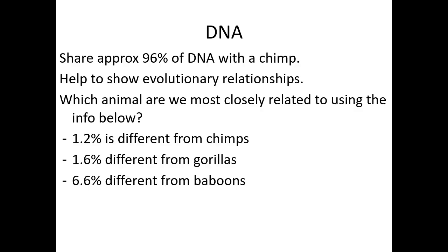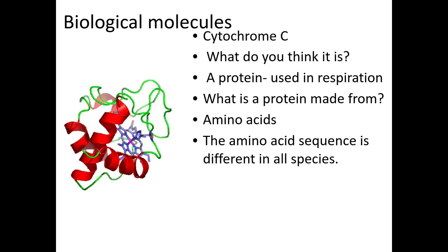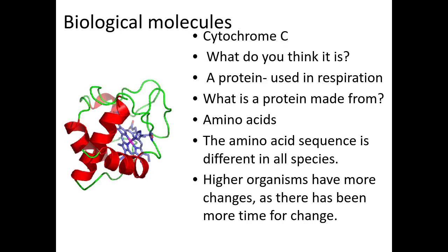We can also compare DNA by looking at similarities or differences in the base sequence. The more similar the base sequence, the more closely related the individuals are; the more different, the more distantly related. We can also look at biological molecules such as cytochrome C — the more similar the amino acid sequence, the more closely related the organisms are.